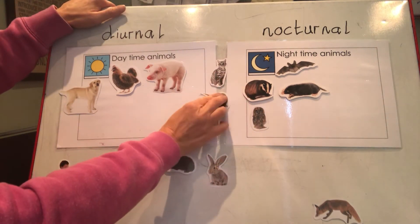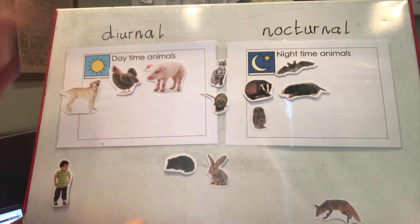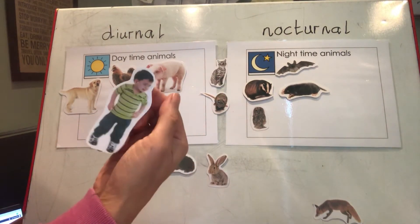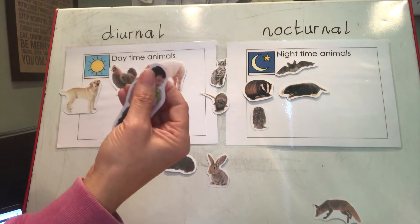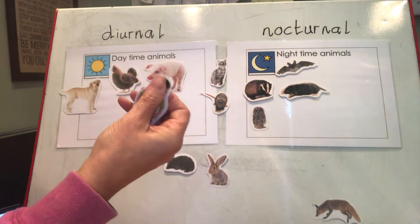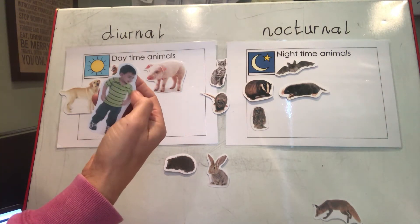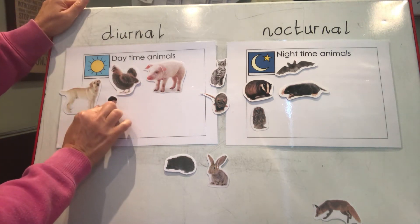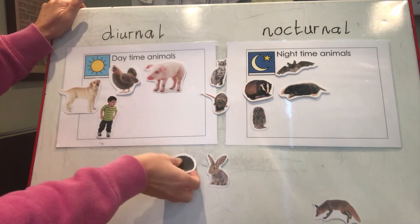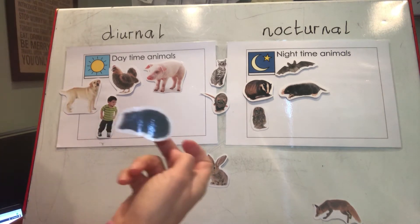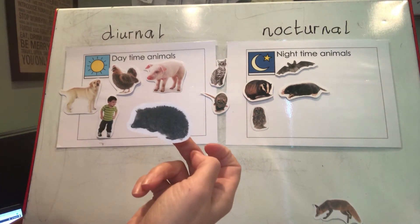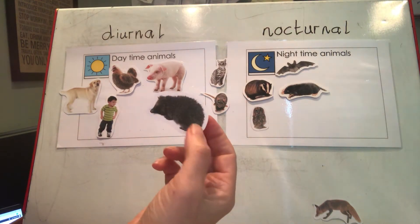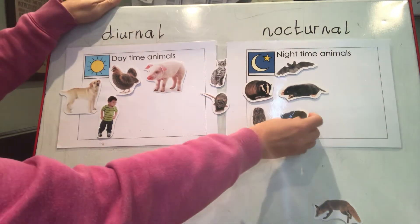I've got a boy, but when we write it we're going to write 'man.' Are we nocturnal? No — we sleep at night, so man goes in the diurnal column. Then I've got a hedgehog — do you see hedgehogs out during the day? Not very often, because they come out at night, so hedgehog is nocturnal.